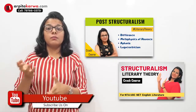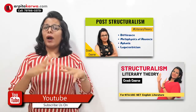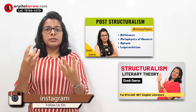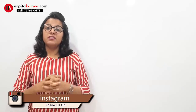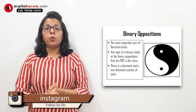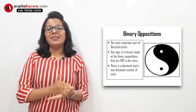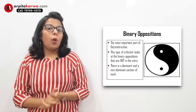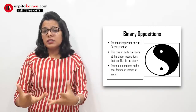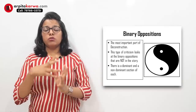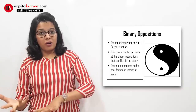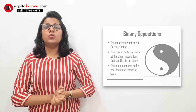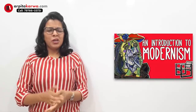We've touched post-structuralism and deconstructionism, and while discussing all these literary theories we discussed the major concept of binary opposites. Structuralists believed that in order to understand one thing you need to understand its exact opposite. Similarly, if you want to understand post-modernism, it's important to first understand what modernism is.